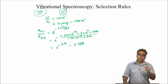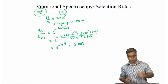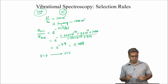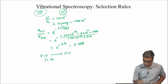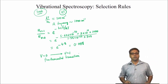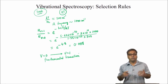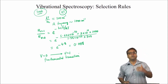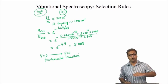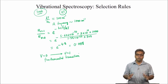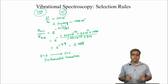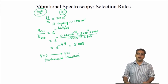Hence the dominant spectral transition is V=0 to V=1, and this transition is known as the fundamental transition. With increasing temperature, the population of V=1 will increase, but in the harmonic approximation all these lines have the same frequency, so the spectrum is also a single line. The question is: do we actually get a single line from the experimental IR spectrum? We will discuss this in the next lecture.